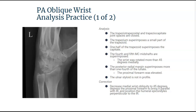Let's take a look at our PA wrist oblique practice analysis. We can see that the trapezoidal joint here is closed. The trapezocapitate joint is also closed. The trapezium is superimposing a small part of the trapezoid. The fourth through fifth metacarpal shafts are superimposed, and this should automatically bring to your mind that we're in excessive obliquity — the wrist is rotated more than the 45 degrees that we need.